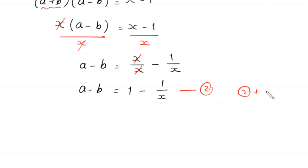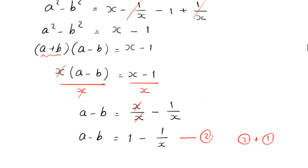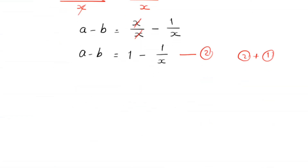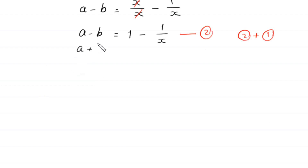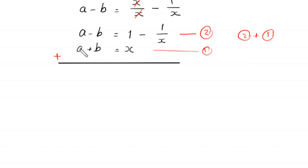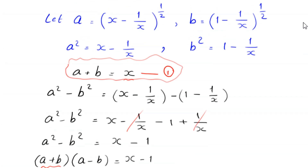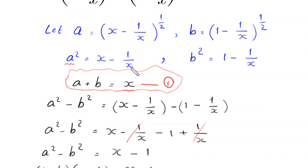We now add equation 2 and equation 1 together. Equation 1 is a plus b equals x. Adding the two equations: the negative b and positive b cancel, leaving 2a equals (x minus 1 over x) plus 1. We then substitute x minus 1 over x with a squared, since a squared equals x minus 1 over x.